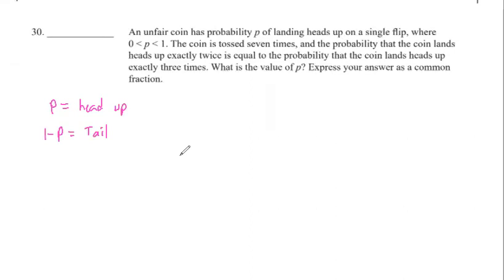The coin is tossed seven times and the probability that the coin lands heads up exactly twice is equal to getting heads up exactly three times. Based on that, what is P? So the question basically says we want to toss seven times, and out of those seven times, we want to get exactly two heads or exactly three heads, and both ways we will get the same probability. So let me show one of those examples.